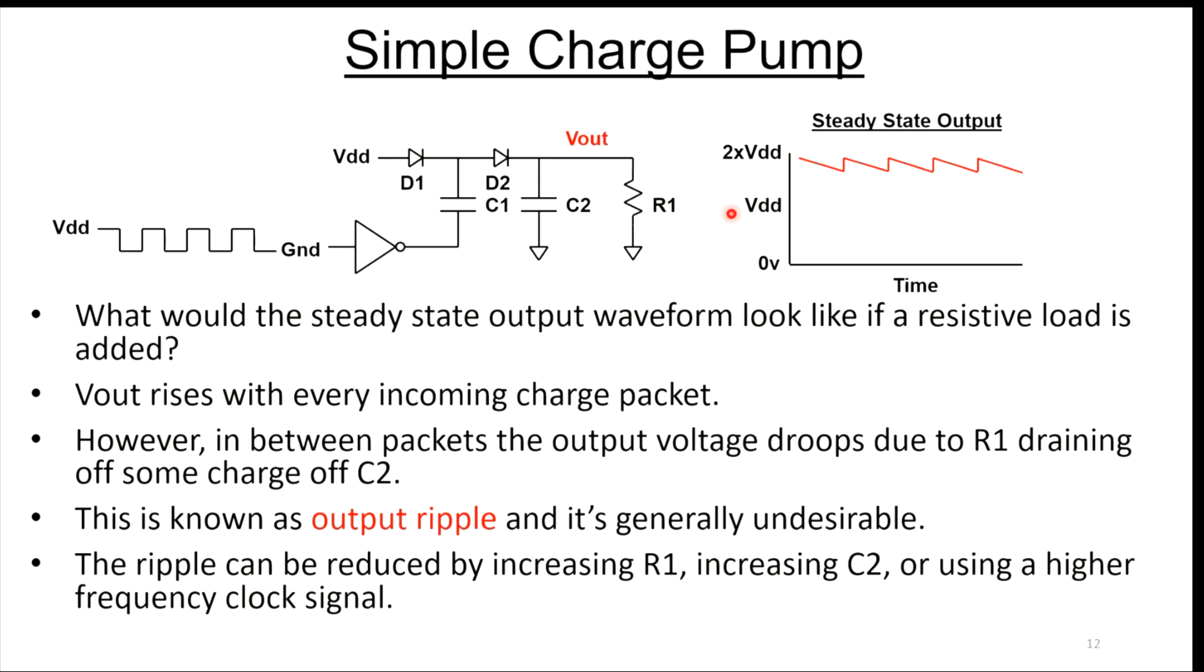Generally, ripple is something you'd like to minimize. Ways to minimize it are you make the resistor bigger, you make the cap bigger, you clock this thing faster. There's a bunch of ways to make the charge pump output ripple better.